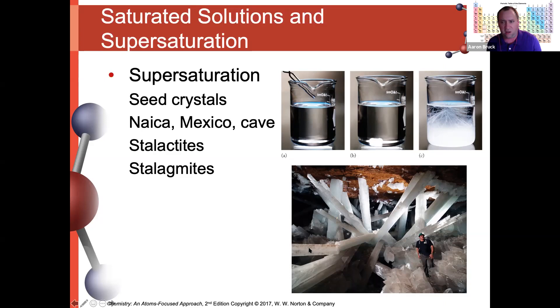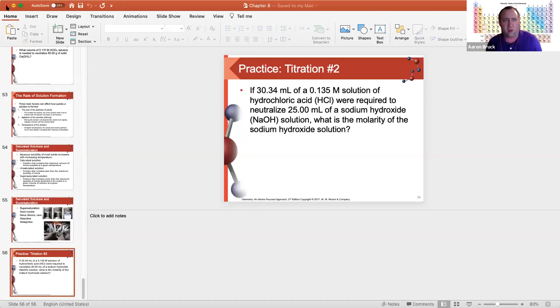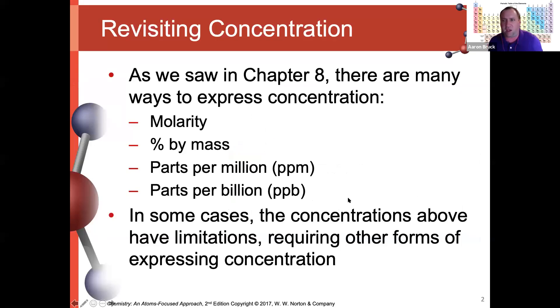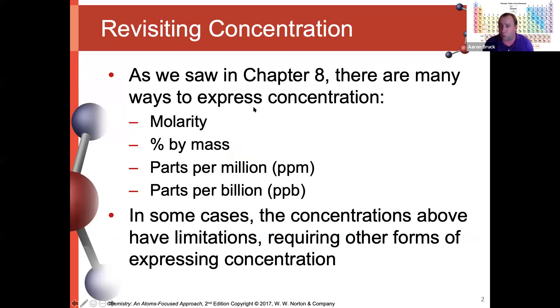Let's move into Chapter 11, starting by reviewing how we ended Chapter 8. We finished by looking at concentrations — molarity, and ratio-based mass concentrations like percent by mass, parts per million, and parts per billion. We're going to start Chapter 11 by introducing a couple of other concentration units, because these units work well for certain applications but have limitations.